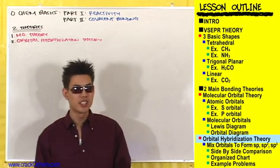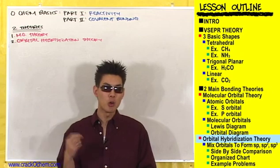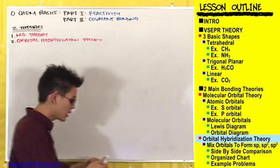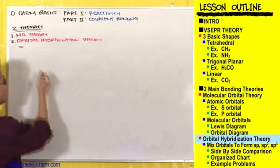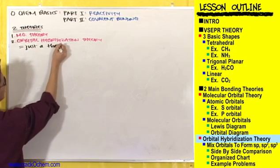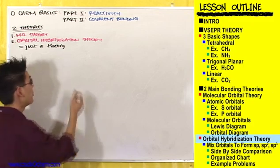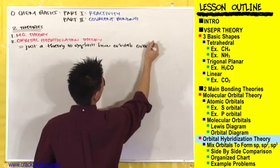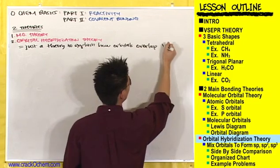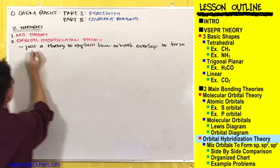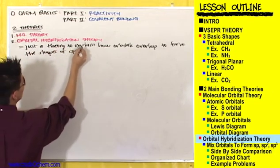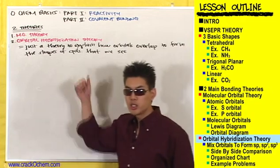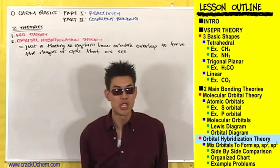Orbital hybridization theory is just a theory to explain how orbitals overlap to form the shapes of compounds that we observe, with those characteristic bond angles. We use this to explain how we get tetrahedral, trigonal planar, and linear shaped compounds.